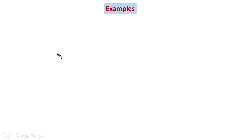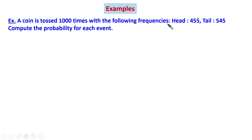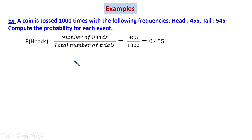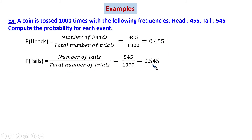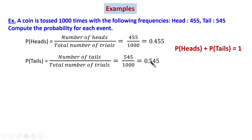Example: a coin is tossed 1000 times with the following frequencies — heads 455 times and tails 545 times. Total is 1000. Compute the probability of each event. Probability of getting head is 455 by 1000, which is 0.455. Probability of getting tail is 545 by 1000, which is 0.545. If you add probability of head plus probability of tail, you get 0.455 plus 0.545 equal to one — the sum of all event probabilities equals one.